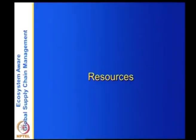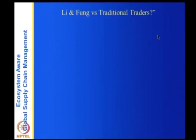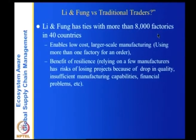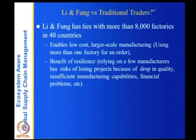The resources that Li and Fung has: it has ties with more than 8,000 factories in 40 countries. It has to manage people and keep data about 40 countries — their trade regulations, cultures and so on — as well as data on 8,000 factories. It enables low-cost, large-scale manufacturing using more than one factory for an order, since a single factory's capacity may not be enough. It may use more than one factory in more than one country.